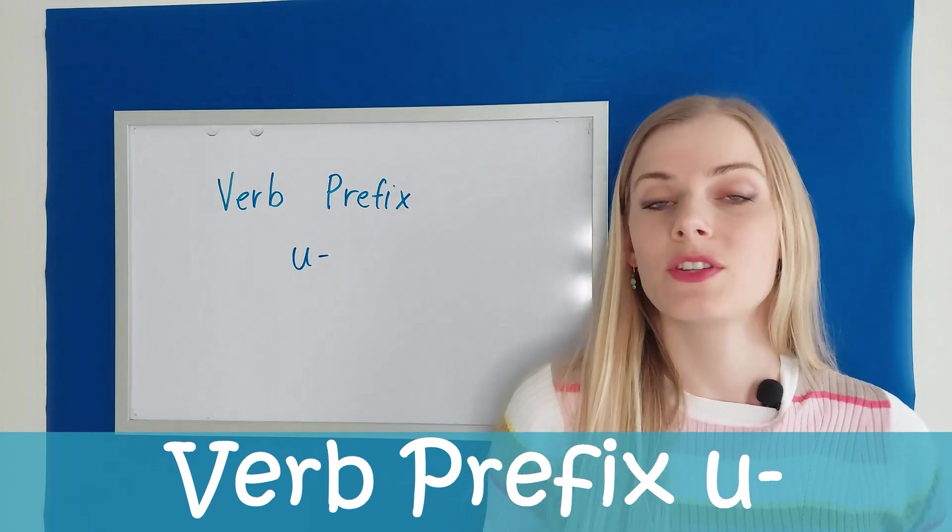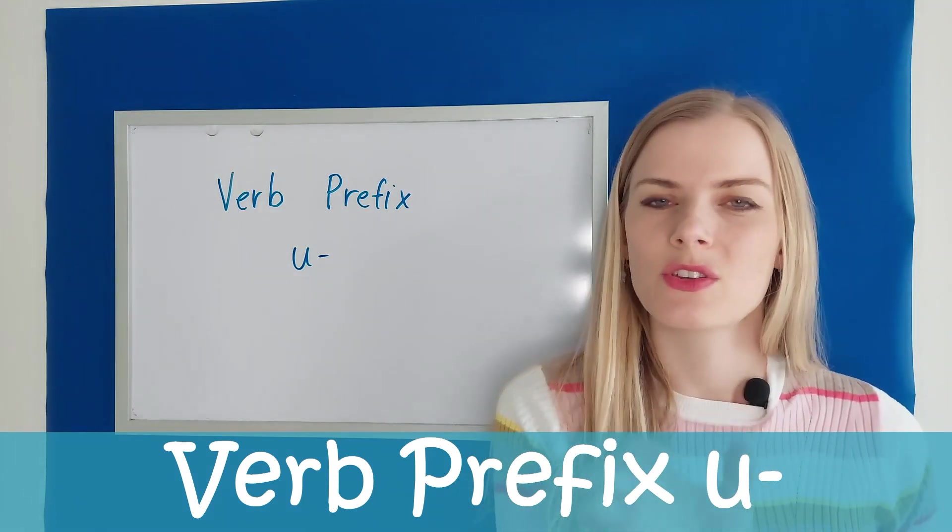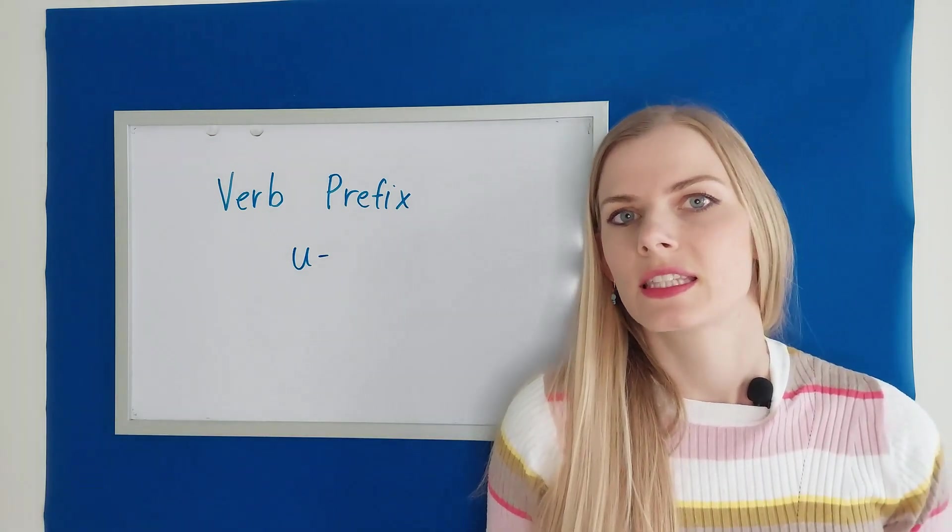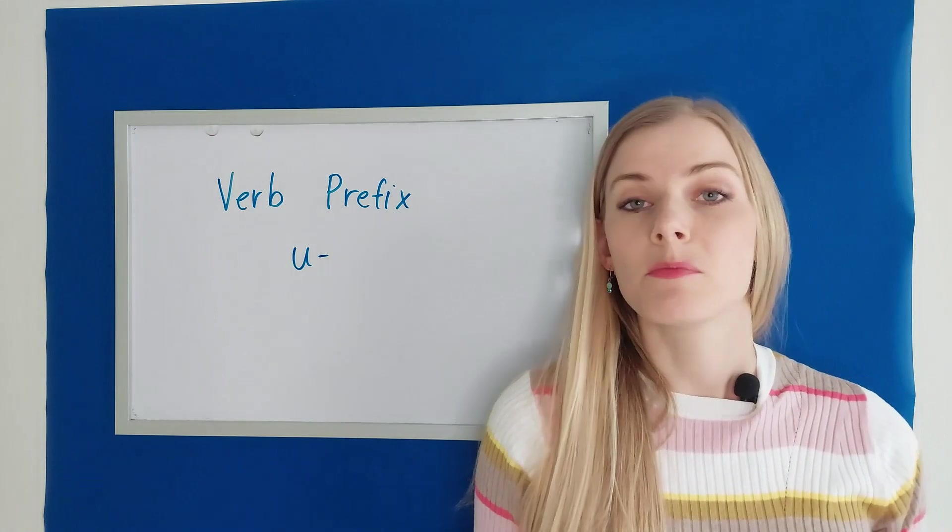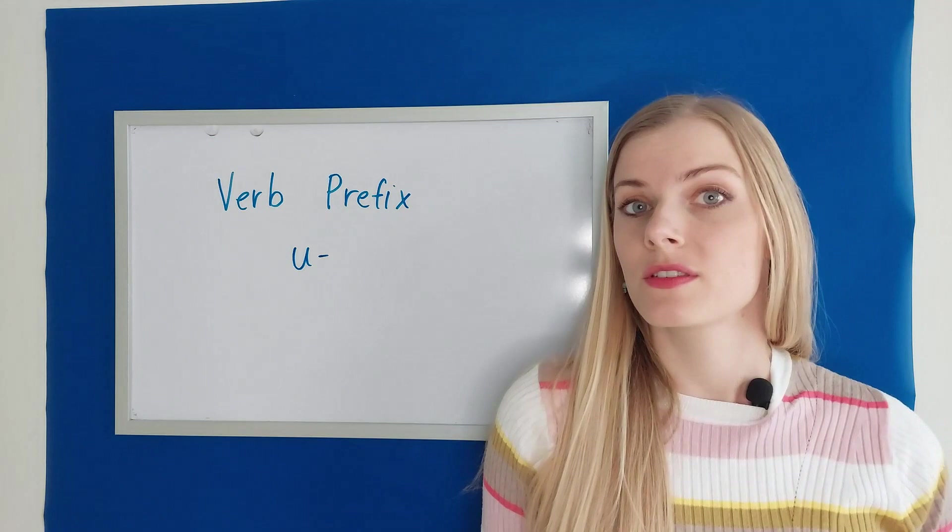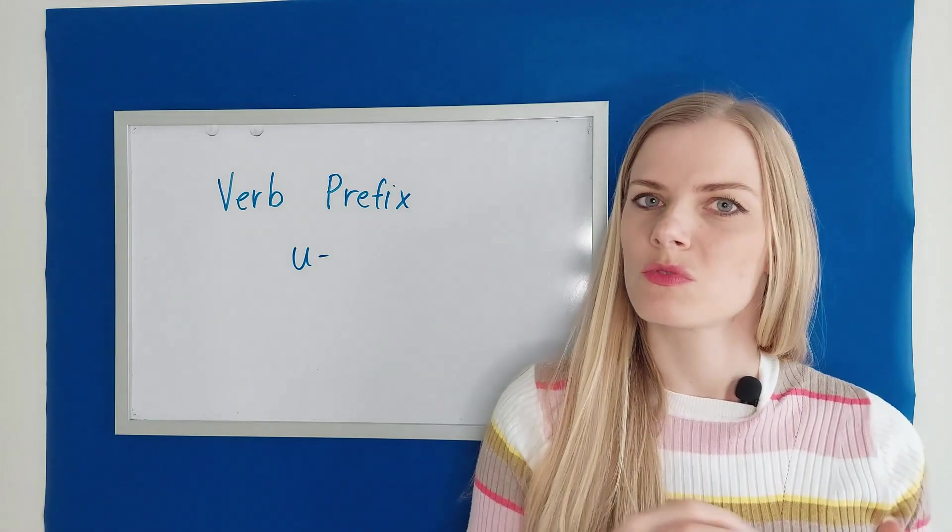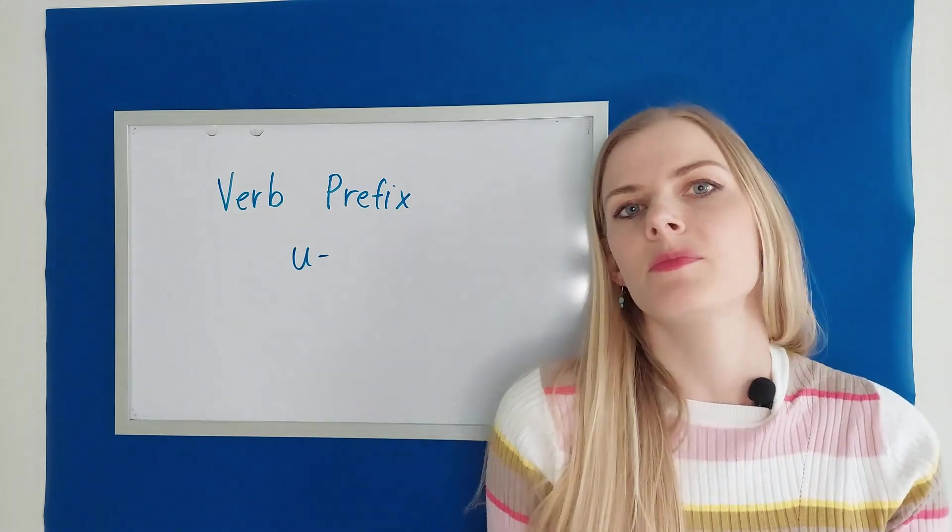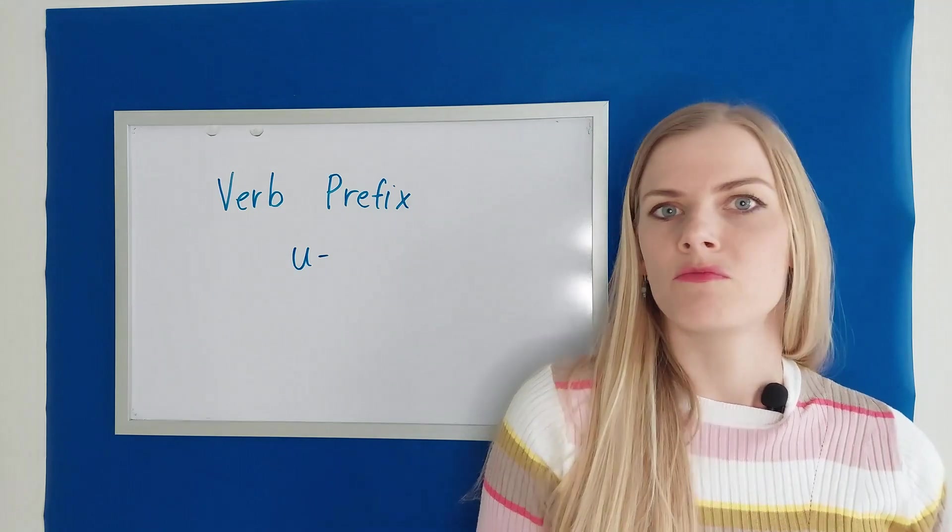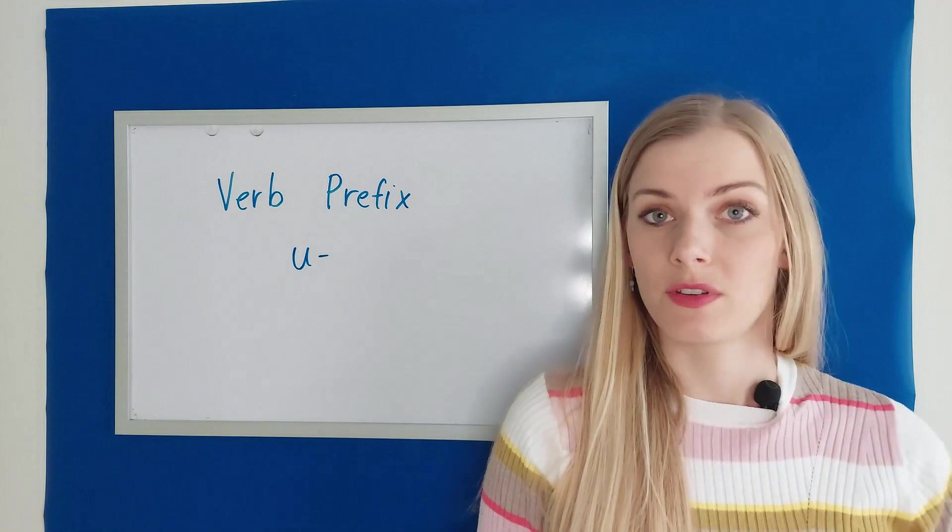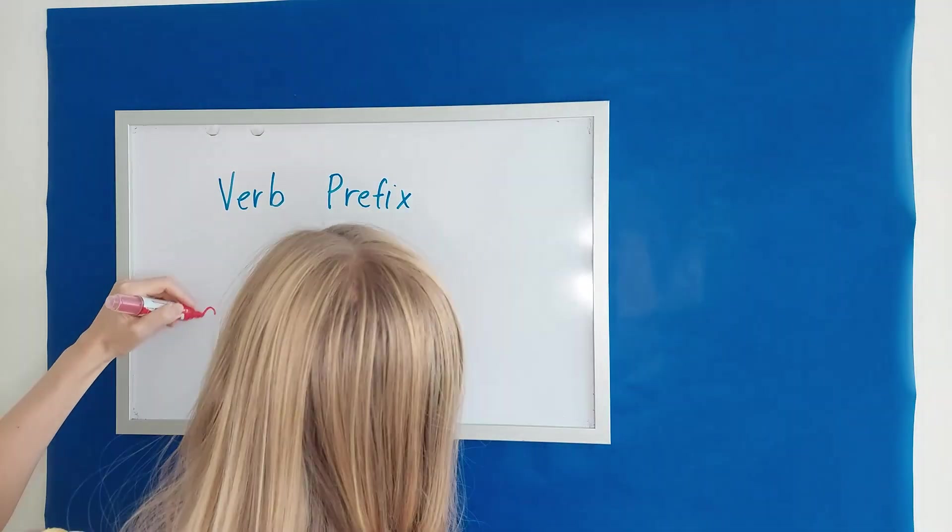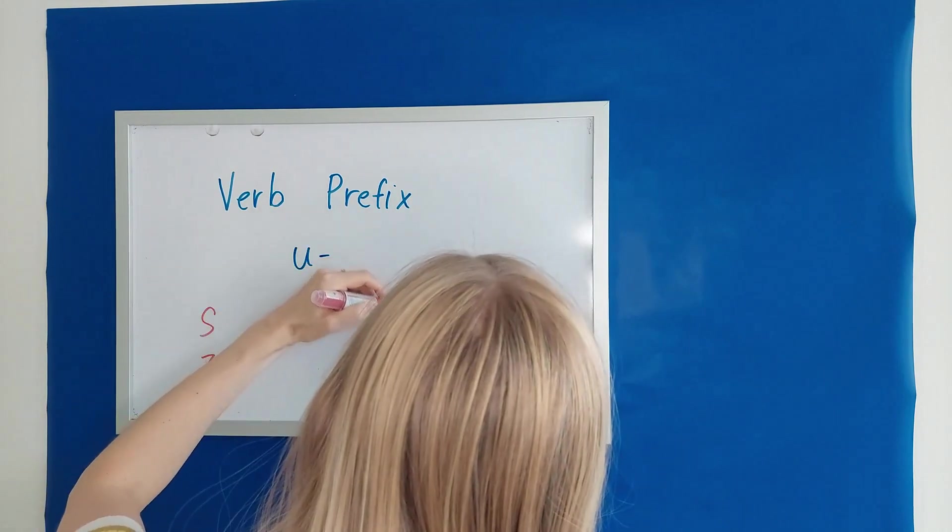In my introductory video I mentioned that when you add a prefix to the verb root, it can affect the aspect. It can make the verb perfective. And U is one of those prefixes that we use when we want to simply make the verb perfective when we speak about a finished action. It's one of the four common prefixes that do that. The other three would be S, Z and Na.